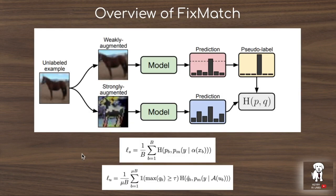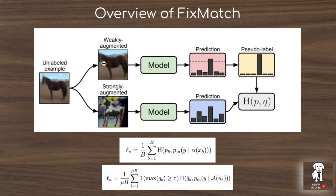This slide presents an overview of the FixMatch semi-supervised learning algorithm. In this algorithm, we have two loss functions: the loss on the unlabeled data and the loss on the supervised data, which are blended together to form the overall loss. With the unlabeled data, the algorithm takes a given unlabeled data point and augments it with two strengths, producing a weakly augmented image and a strongly augmented image. This is already a novel contribution of this paper — it's not common to compare the weakly augmented image with a strongly augmented image.